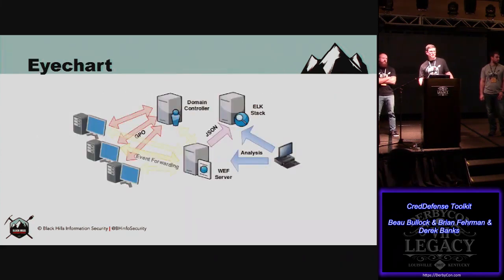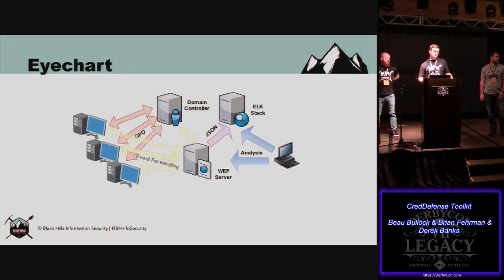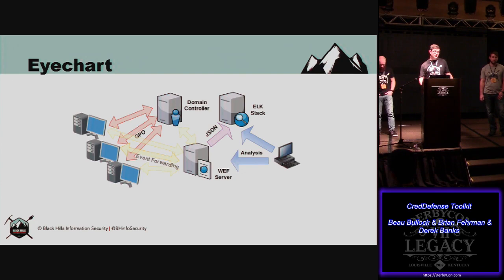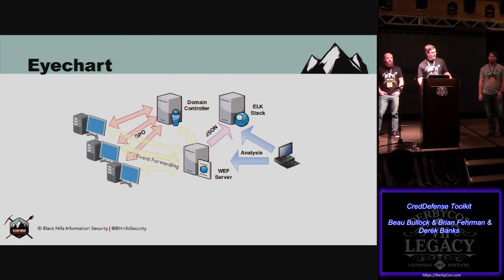Here's an eye chart of how this actually works. Through GPOs, you configure the Windows Event Forwarder setup. The machines subscribed to send their logs to the Windows Event Forwarder server do it without putting an agent on the endpoint — it uses Windows Remote Management. You could do a whole talk on this. I have a blog post that describes exactly step by step how to set this up, and it'll be on our blog by the end of the day.